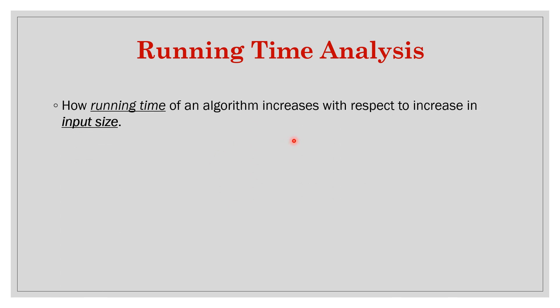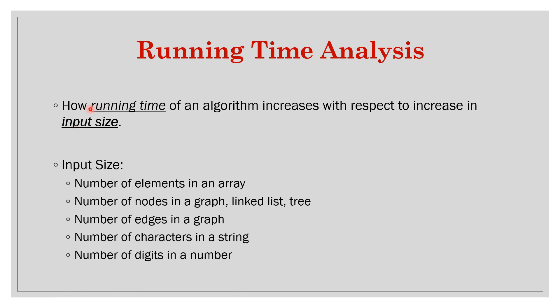By running time, we mean how the time taken by a given algorithm increases with respect to an increase in input size. We don't measure absolute times; we see how running time depends on the size of input. If input doubles and running time also doubles, it's linearly related. If input doubles and running time becomes roughly 4x, then it's quadratically related — a higher-order power of n, specifically n squared.